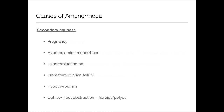Secondary causes are typically in older women — say from 18 to 40 — who have had established periods but then haven't had one for six months. The most important one, which everyone forgets, is pregnancy. You're not going to get a period if you're pregnant. That's always a favourite for exams. Always do a pregnancy test — it's a very simple test and one of the most common causes of amenorrhea.